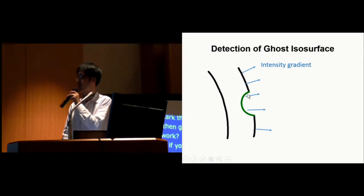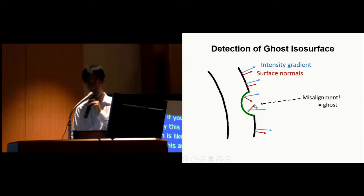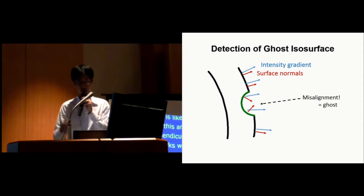Our implementation is like this. Intensity gradient is like this. And then, isosurface should actually be perpendicular to this intensity gradient if it works well. However, this problematic region, surface normal is usually aligned, ideally aligned, but here, surface normal is not aligned with intensity gradient. That's how we identify ghost surfaces, and then paint them into green.